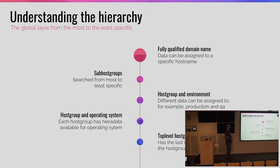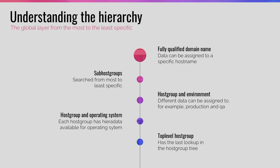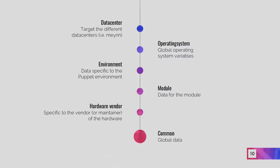The next key concept of Hiera — and that's why it's called Hiera, from 'hierarchy' — is the priority for the data. I'm going to talk about the global layer; there are different layers, and this is the main one that users can alter. From most specific to least specific: the most specific is the node itself using the fully qualified domain name. Then sub-host groups, then host group combined with environment or operating system, and finally the top-level host group — which could be 'punch', 'PI', or whatever your host group is.